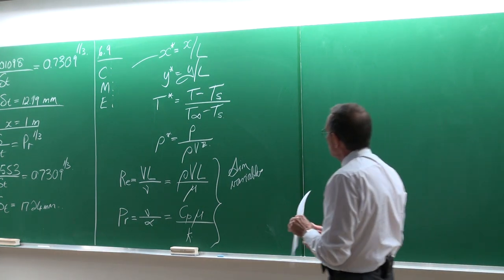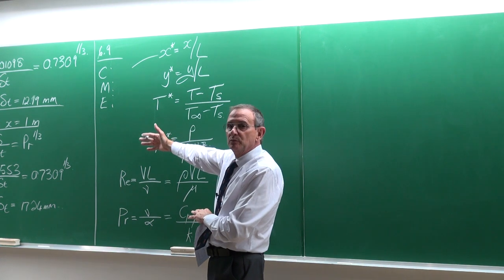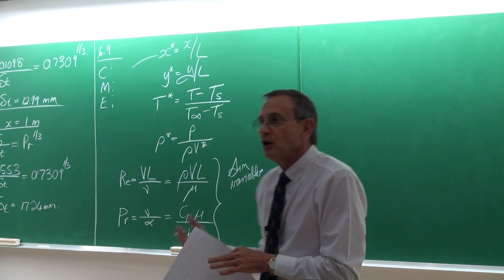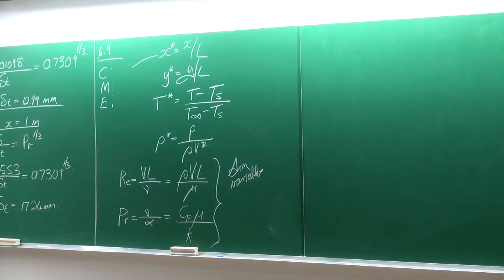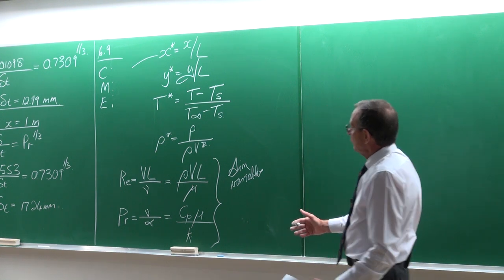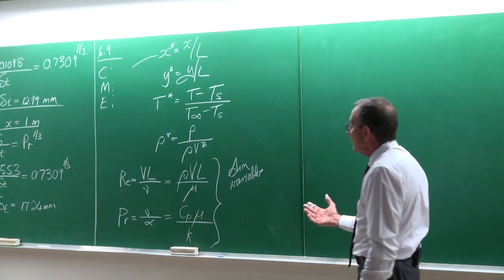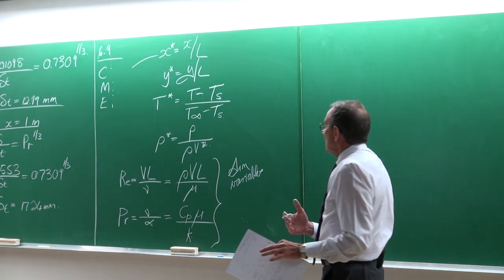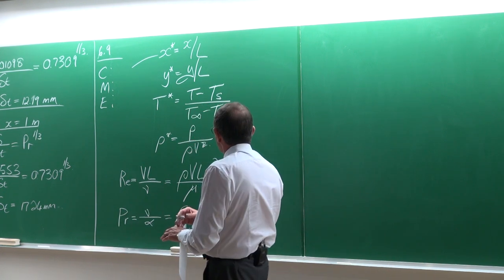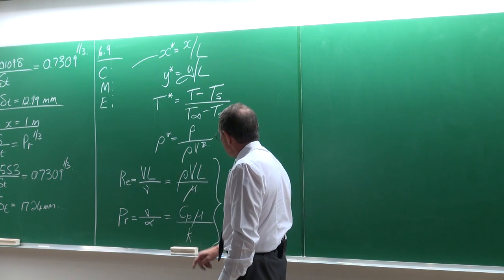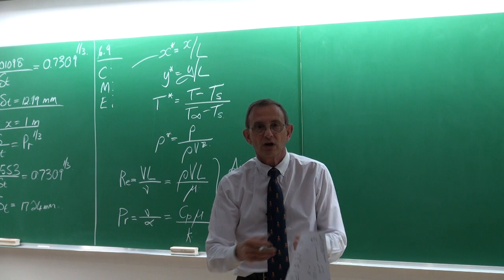These similarity variables are very important because, although we have solutions for very simple geometries like flat plates, the moment the geometry becomes more general, those analytical equations do not work. Nobody has won the Fields Medal yet for solving the Navier-Stokes equations analytically. Therefore, we have to do experiments. When doing experiments on drag or heat transfer, the number of variables to consider is huge — density, viscosity, velocity, C_p, thermal conductivity, and more. It is physically impossible to run experiments for every possible combination.